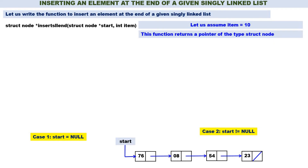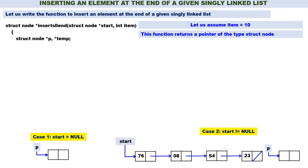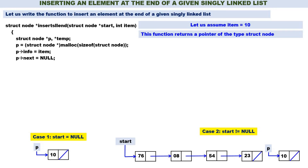Assume item = 10. This function returns a pointer of the type struct node. We declare two temporary pointers, p and temp. First, we get a new node pointed by p: p = (struct node*) malloc(sizeof(struct node)). We put item into the node: p->info = item. Since the new node is inserted at the end of the linked list, its address part should be null: p->next = null.